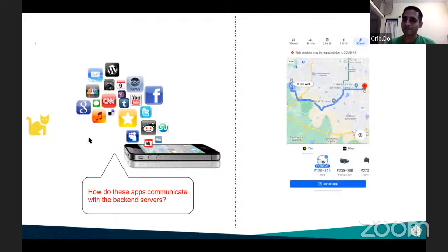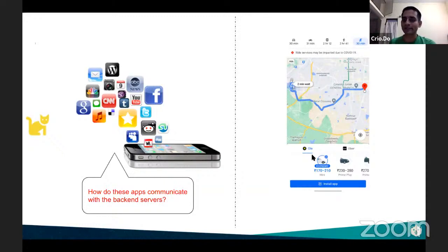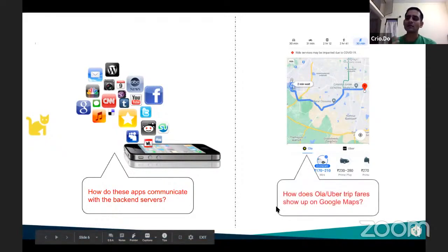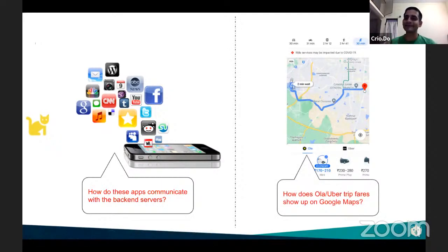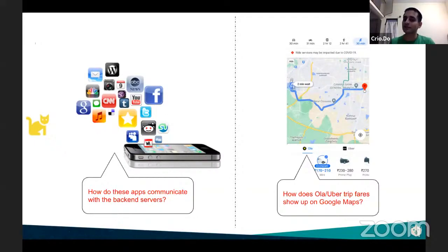Inside Google Maps, when you try to get directions, sometimes there is a hailing a cab option. It shows up Ola fare or Uber fare, depending on your city. The question is, how is it that Google Maps is able to show the pricing from Ola or Uber? And by the way, it's not a static fare — if there is surge pricing, Google Maps will also reflect that. And of course, Ola or Uber is not going to share their code with Google Maps. So how is that happening?